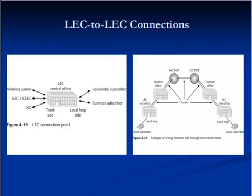A call that stays within a single local exchange office can be handled exclusively by that CO's switching equipment. But if a call leaves the central office's serving area or is between parties who subscribe to different LEX services, a connection between carriers is necessary. This connection occurs along trunks between tandem offices. Rates for using another carrier's facilities are regulated by the FCC or the state PUC depending upon whether the services are interstate or intrastate, and these rates may frequently change.